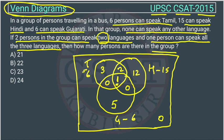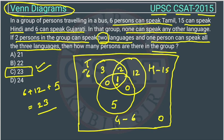Now we add them all: 3 plus 2 plus 1 equals 6, plus 12 plus 5 equals 23. The question asks how many persons are there in the group, and the answer is 23, which is option C. Since outside is 0, there is no additional count, so the final answer is 23.